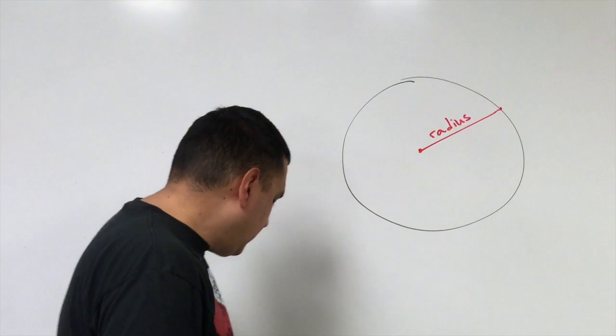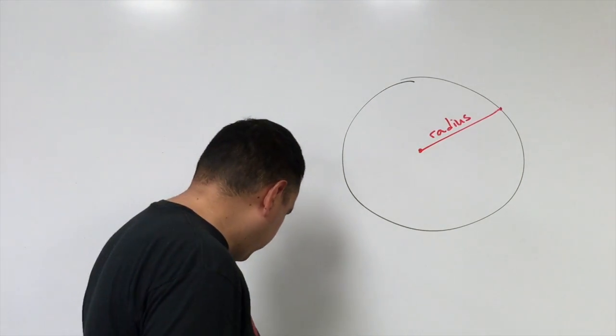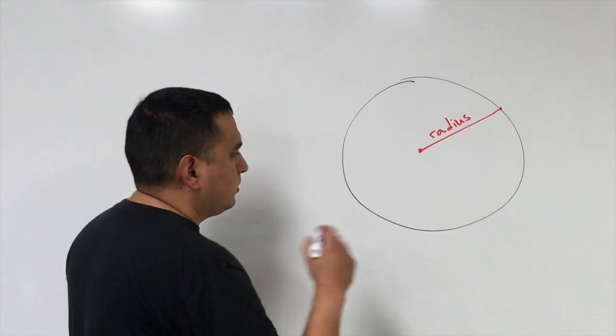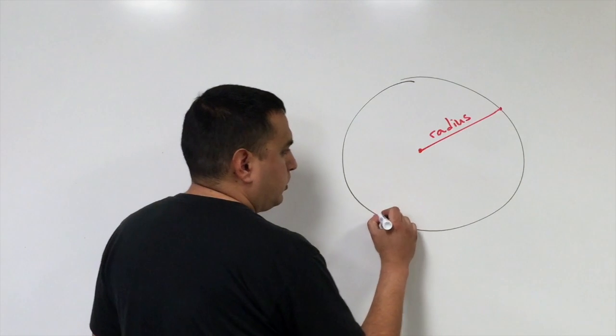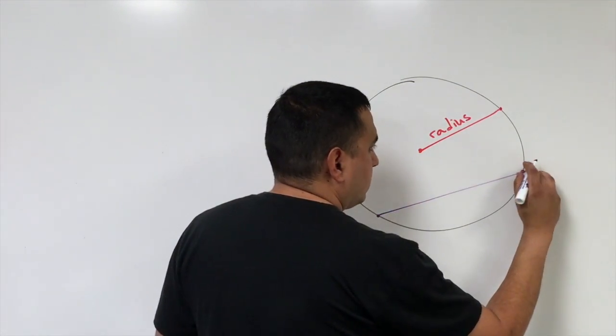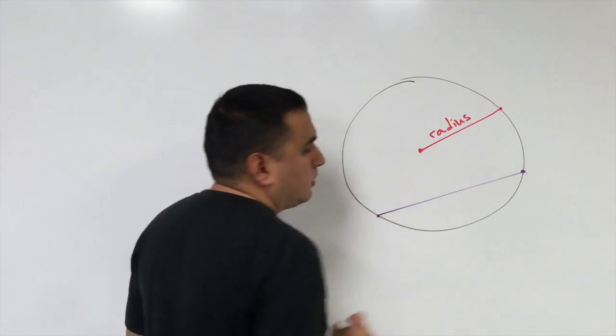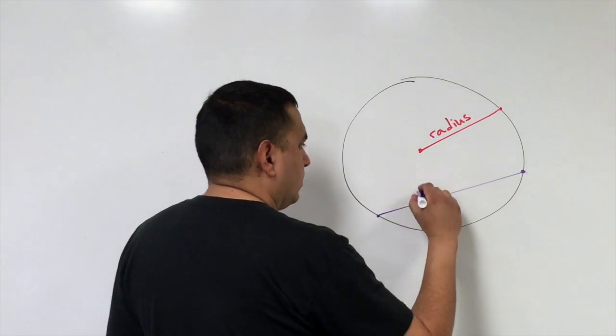The next one goes from one side of the circle to the other side of the circle, and we call that the chord.